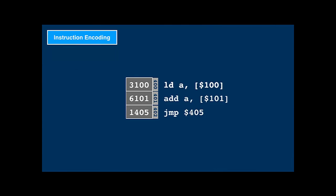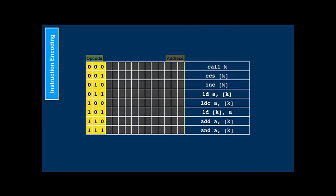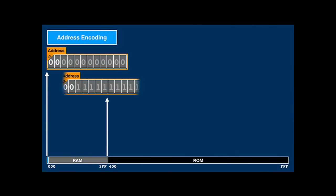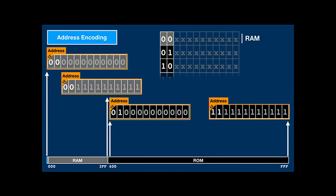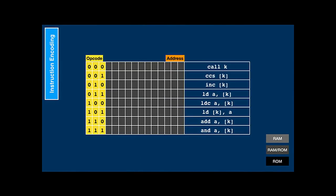Now we've seen the instruction set, and in the examples we've seen the codes that represent instructions in memory. Let's look at how the encoding works. For the load instruction, the upper three bits are the opcode representing load A, and the remaining 12 bits encode the address. This allows for a total of eight instructions, but there are more than eight instructions. RAM addresses always start with 00, and ROM addresses start with anything but 00. So the store instruction, which only makes sense on RAM, only needs to encode 10 address bits instead of 12, making room for another three RAM-only instructions.